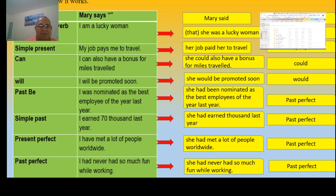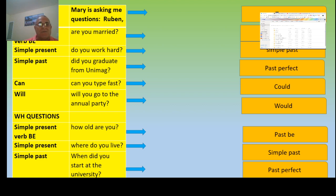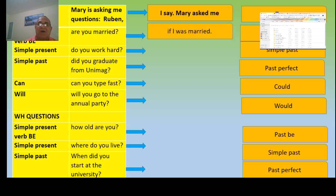So now let's continue. But now, when Mari asks questions, we use reported questions — that's another topic. The other one was reported speech. This time, Mari is asking me questions. For example, she says: 'Ruben, are you married?' And if I refer this to another person two or three days later, I say: 'Mari asked me if I was married.'